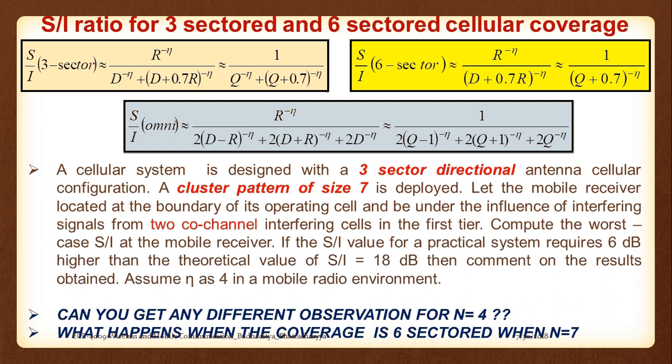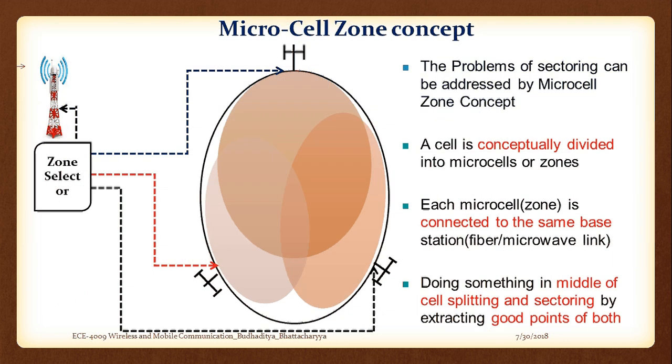Which equation you use depends on which type of antenna is being deployed. The omnidirectional case is what we have discussed so far — the base station radiates in all directions. Now that we know sectoring, we go for 3-sector or 6-sector depending on the data provided.